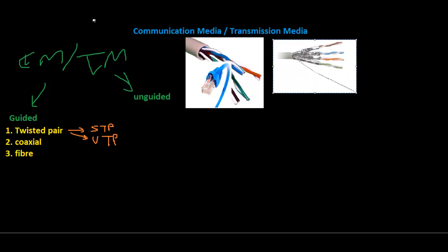The unshielded twisted pair is broken down into five categories. The first is Category 1, used in telephone wires for voice. Category 2 or Cat 2 transmits data up to 4 megabits per second. Cat 3 transmits data at 10 megabits per second or Ethernet.